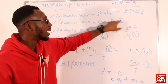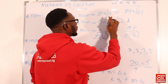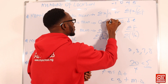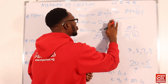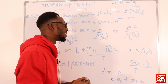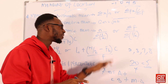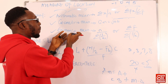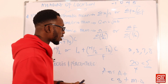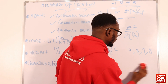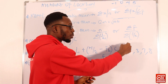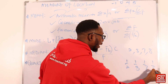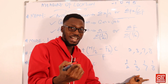For geometric mean: if I have three items, I multiply them together and find their cube root; four items — fourth root; five items — fifth root; two items — square root. Make sure you are working with non-zero values. Now for harmonic mean: when you have numbers like 2, 3, 7, 8, you find the reciprocals — 1/2, 1/3, 1/7, 1/8 — and then find the arithmetic mean of those reciprocals.